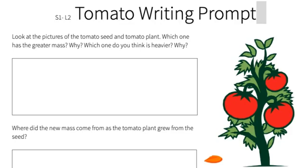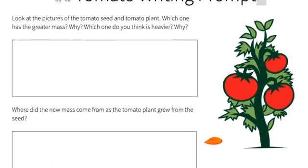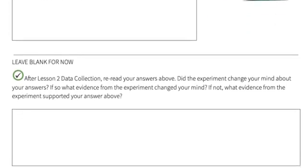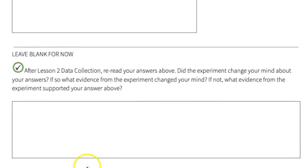At this point, students will probably mention soil as an important need for plants. The sprouter experiment set up in the explore section will test if the mass in plants comes from the soil or elsewhere. Students will revisit this page after data is collected in this lesson to see if the results changed their minds.